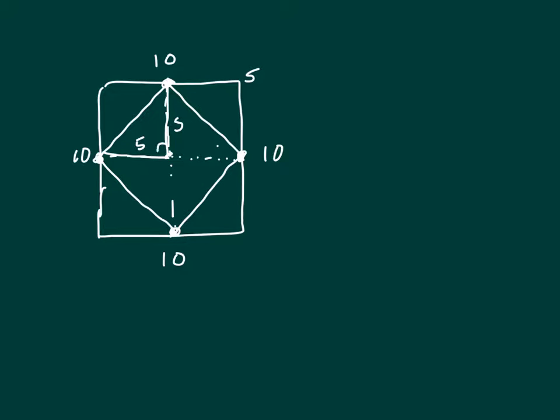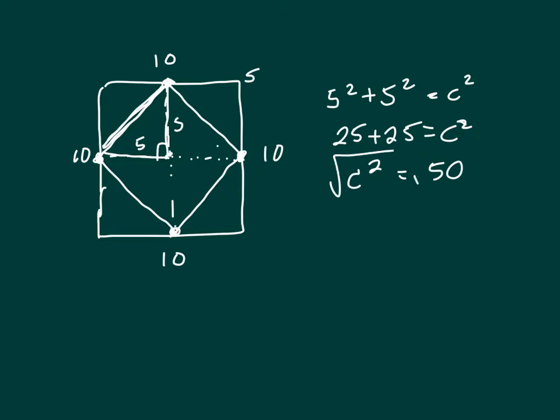And I've got a right triangle, so I can use Pythagorean theorem to find this side. So A squared, which is 5 squared plus 5 squared, would equal C squared. So that's 25 plus 25 equals C squared. That's C squared equals 50. Take the square root.